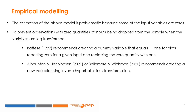The estimation of the above model is problematic because some of the input variables are zeros. To prevent observations with zero inputs from being removed from the sample when variables are added to a log, Battese (1997) recommends creating a dummy variable equal to one for plots reporting zero for a given input and replacing the zero quantity with one. But more recent studies, such as that of Ihooden and Henningsen (2021) or that of Bellemar and Wishman (2020), recommend creating a new variable by using an inverse hyperbolic sine transformation. The advantage of such an approach is that it approximates the natural logarithm of the original variable and allows it to preserve observations of zero value.